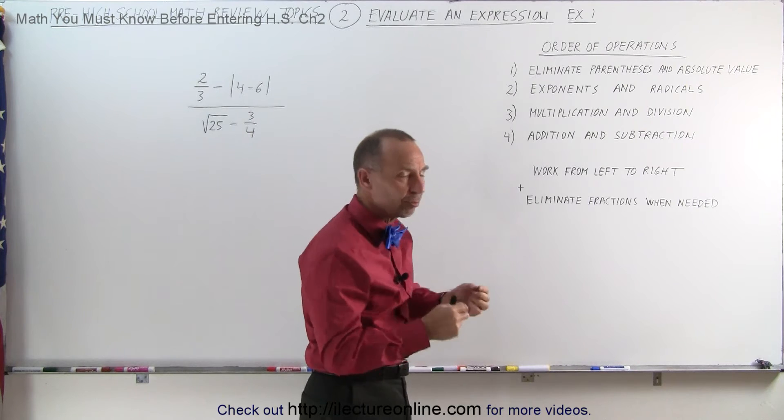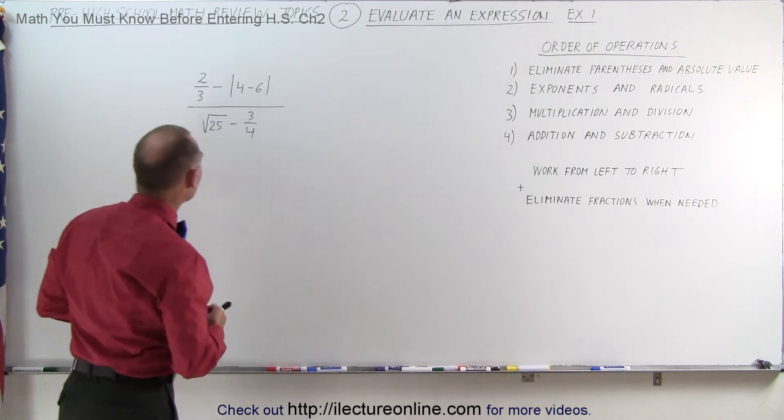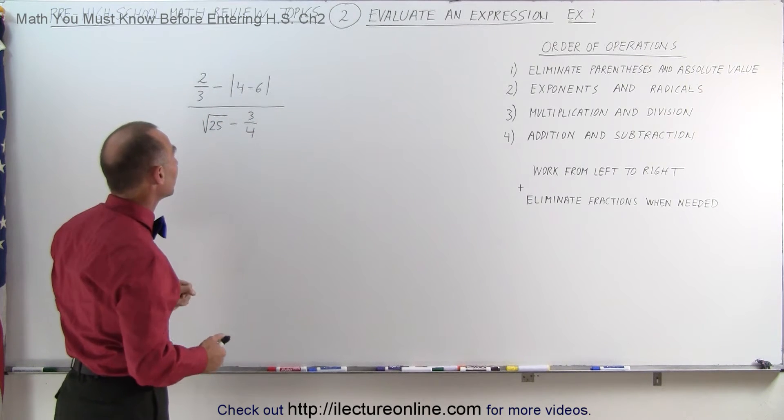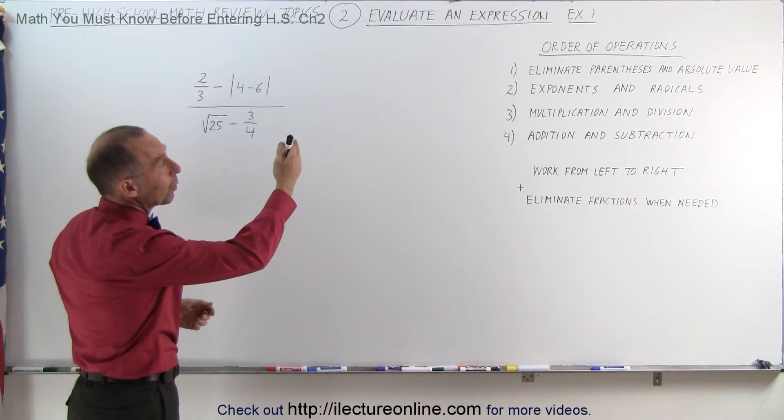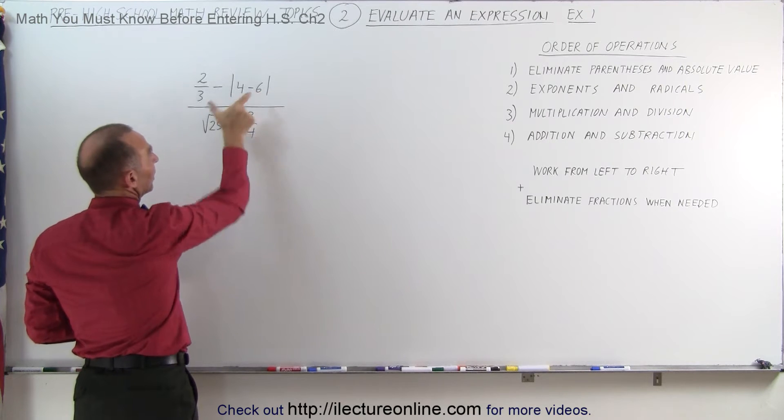And then there's cases where you want to eliminate fractions as well, and there's special techniques that we use to do that. So here's our first example. Notice we have fractions, we have an absolute value symbol, we have a radical. How do we do that? Well first of all, we want to eliminate parentheses and absolute value symbols, so let's concentrate on this part right here first.